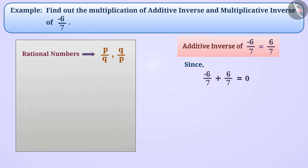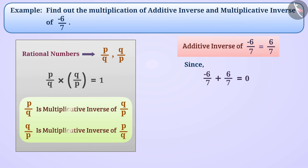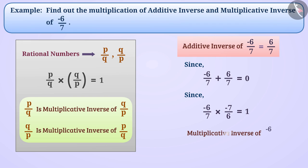Similarly, if multiplication of any two rational numbers is 1, then both rational numbers are multiplicative inverse of each other. Since minus 6 by 7 multiplied by minus 7 by 6 is equal to 1, therefore we can say that multiplicative inverse of minus 6 by 7 is minus 7 by 6.